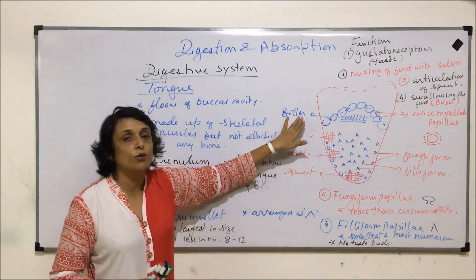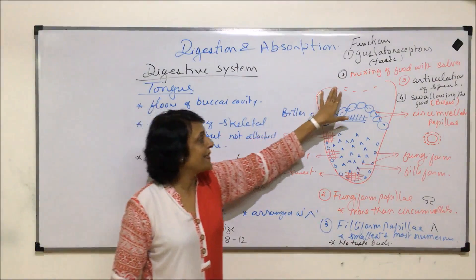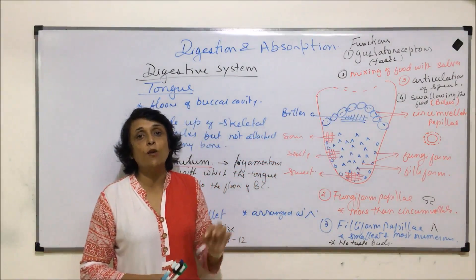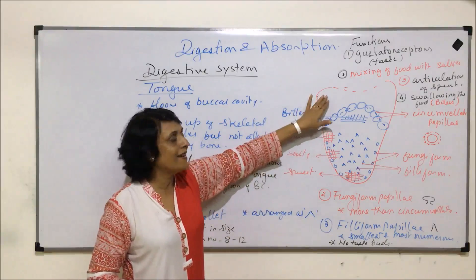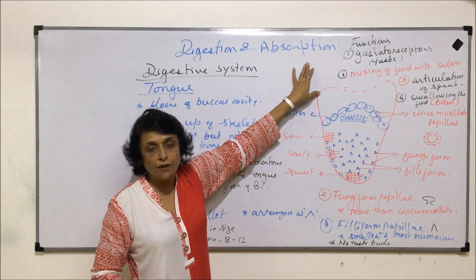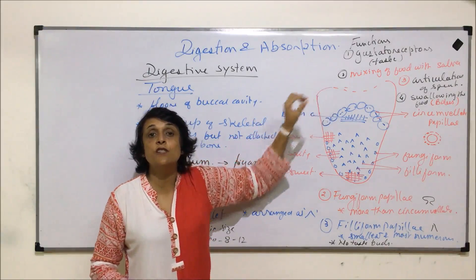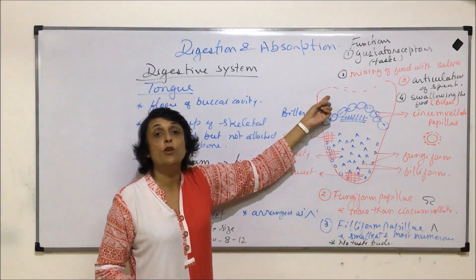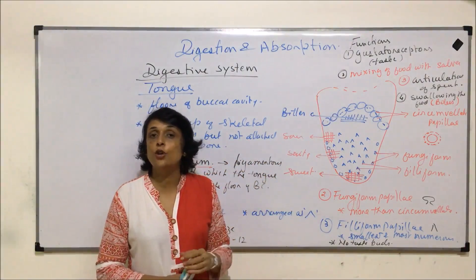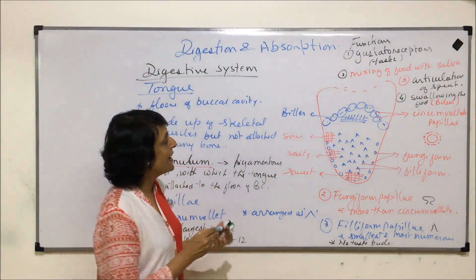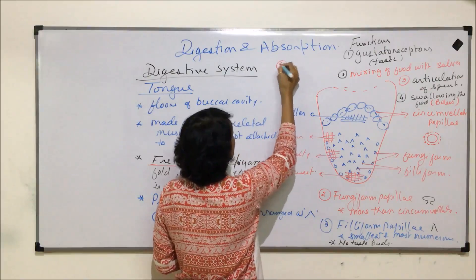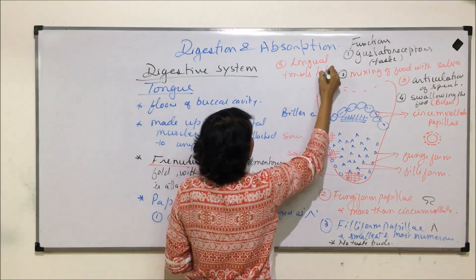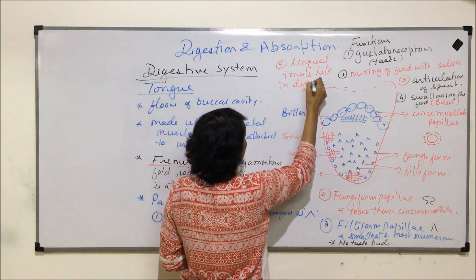At the base of the tongue there are lingual tonsils, and lingual tonsils provide or help in defense. We can add that function along with the tongue's functions — lingual tonsils, which are lymphoid tissues, help in defending our body by fighting with and killing the germs which enter with our food.